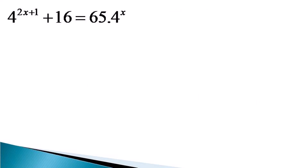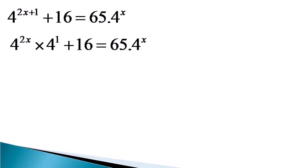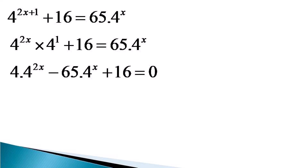For solving this equation, first we represent the first term on the left hand side as 4 raised to the power 2x into 4 raised to the power 1. The rest of the equation remains as such: plus 16 is equal to 65 into 4 raised to the power x. Now we transfer all the terms to the left hand side to get the equivalent equation: 4 into 4 raised to the power 2x minus 65 into 4 raised to the power x plus 16 is equal to 0.